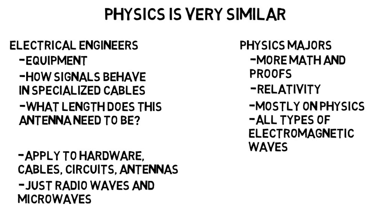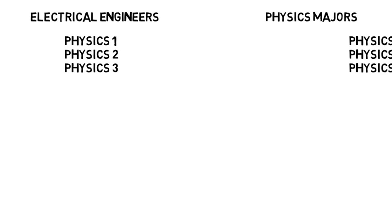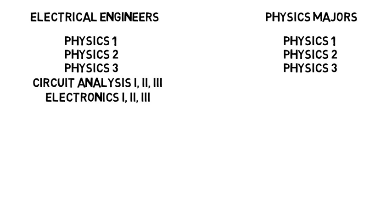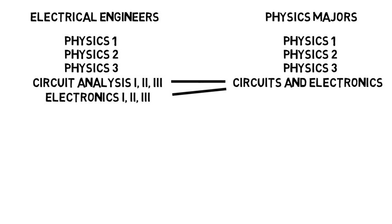I feel I've already thrown a lot at you, so let's back up and just summarize the similarities. Electrical engineers and physics majors both take the same first three physics classes that all engineers take. Electrical engineers take a bunch of circuits and electronics courses. Then physics majors take at least one, which kind of summarizes four or so of these six others. And they both take electromagnetic waves courses.